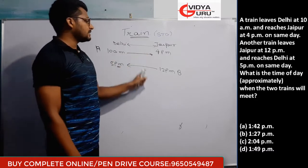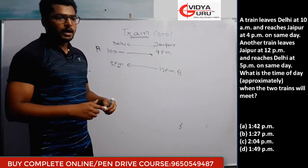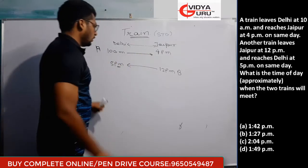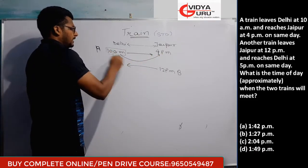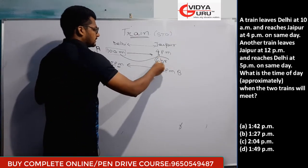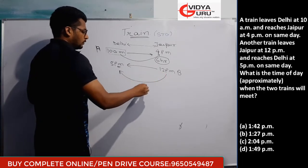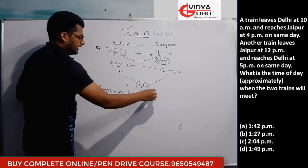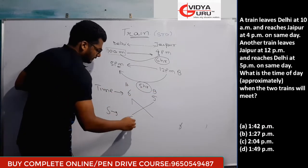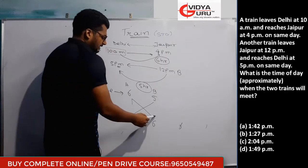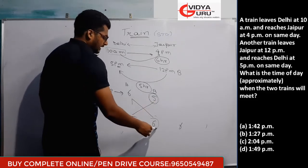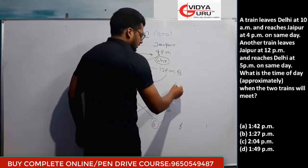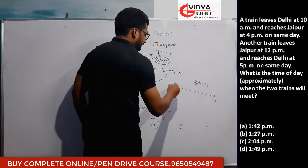Since distance is constant, the ratio of speed is the reverse of the ratio of time. Train A takes 6 hours (10 AM to 4 PM), and train B takes 5 hours (12 PM to 5 PM). Ratio of times is 6:5, so ratio of speeds is 5:6. Assuming distance = speed × time: 5 × 6 = 30 units for both. So the distance between Delhi and Jaipur is taken as 30.